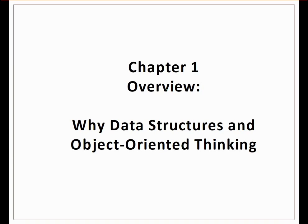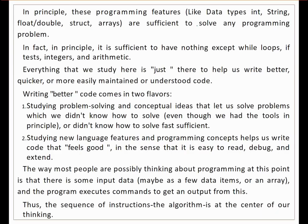Let us start with an overview: why data structures and object-oriented thinking? Data structure books are available, but linking them with the object-oriented aspect is very important — and this book and these notes get to that. In principle, programming features like data types, integers, strings, floats, doubles, structs, and arrays are sufficient to solve any programming problem. With loops, nothing except loops with test integers and arithmetic is strictly necessary.